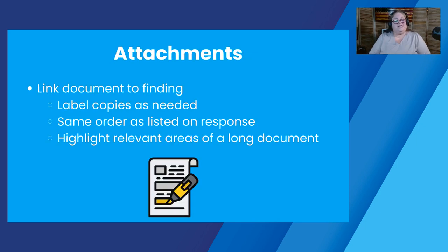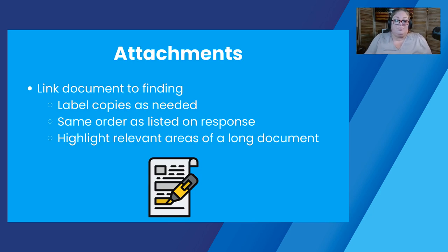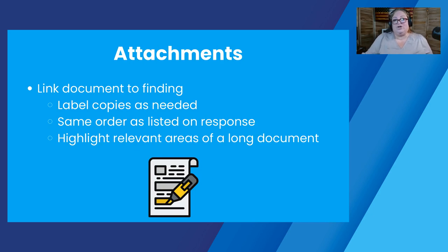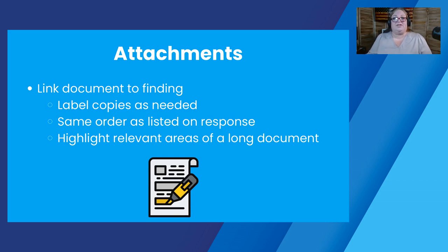With your attachments, you want to link each document to a finding. The best way to do that is to label your attachments — you can put something in the corner indicating exactly what each attachment corresponds to — preferably in the same order as the findings are listed. It makes it a lot easier to locate and link to the corresponding findings. If it's a long document — for instance, if we told you to revise your tenant selection plan — please highlight the relevant portion of the document that you had to correct. It makes it a lot faster for your reviewer to close your management review.